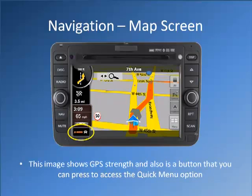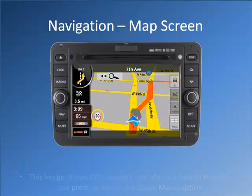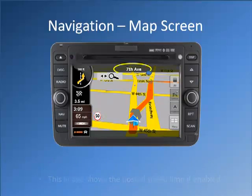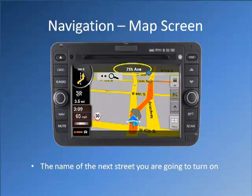This image shows GPS strength and also is a button that you can press to access the quick menu option. This image shows the posted speed limit if enabled. The name of the next street you are going to turn on.